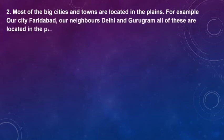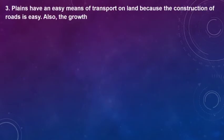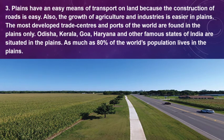Most of the big cities and towns are located in the plains. For example, our city Faridabad, our neighbors Delhi and Gurugram — all of these are located in the plains. Plains have easy means of transport on land because the construction of roads is easy. The growth of agriculture and industries is also easier in plains. The most developed trade centers and ports of the world are found in the plains. States like Odisha, Kerala, Goa, and Haryana are situated in the plains. As much as 80% of the world's population lives in the plains.